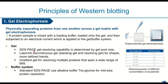The resolving capability of gels is determined by pore size, governed by the concentration of acrylamide and its crosslinker. In general, a higher percentage gel has smaller pore size and is used to separate lower molecular weight proteins. For the SDS-PAGE buffer system, we use an alkaline buffer — Tris-glycine — for mid-size protein resolution.